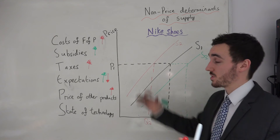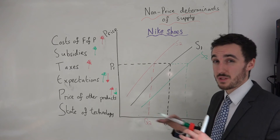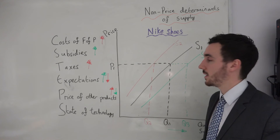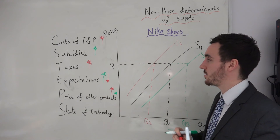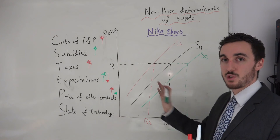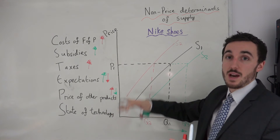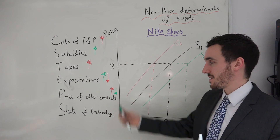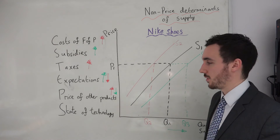If the price of other products goes down — let's say the price of t-shirts goes down — firms will see that nothing's happened to the Nike shoe market and they jump into the Nike shoe market instead. So the supply curve in the Nike shoe industry would shift to the right. This is a really important one to discuss because you can start to pick up on whether in reality it's that easy to jump from one market to another without lots of costs involved.